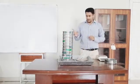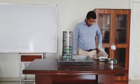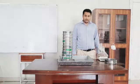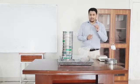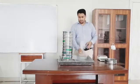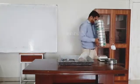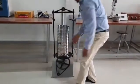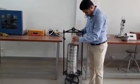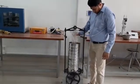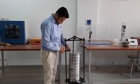Before placing the sample in the sieves, measure the total weight of the sample — it is 1190 grams. Record the total weight of the sample in your notebook. Next, place the sieves on the sieve shaker, place the lid on the top, and secure your grip.